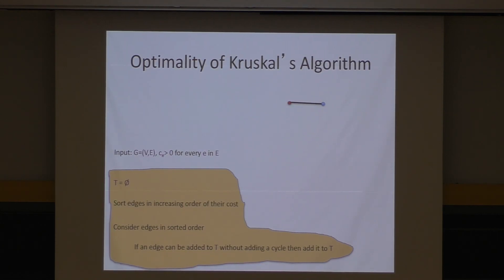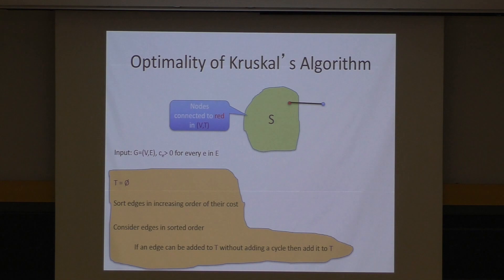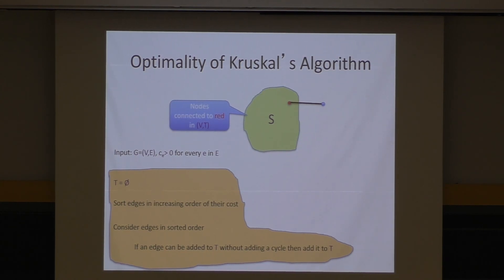Here's the argument for optimality of Kruskal's algorithm. Let's say Kruskal is trying to add an edge from the red node to the blue node. We need to figure out what the cut S should be — for which cut should this edge be a crossing edge? Unlike Prim's, the definition of S is not obvious. So you define S as the set of all vertices connected to the red vertex using only edges picked so far in T.